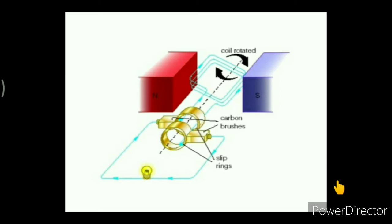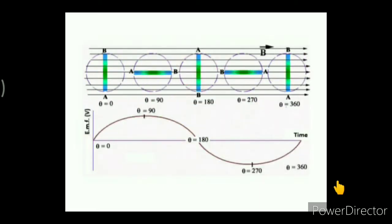Using this figure, we will see the working of an AC generator as the coil is turned in a clockwise manner and the magnetic field is pointing towards the right. First, the coil starts at the reference position of 0°. The plane of the coil is perpendicular to the magnetic field lines, meaning the sides of the coil are moving parallel to the field lines and not cutting through any magnetic field lines. Hence, no EMF is induced.